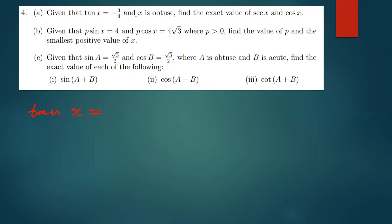We've been given that tan x is negative 3 over 4, and we've been told that this angle is an obtuse angle, meaning it's between 90 and 180 degrees. We need to find the exact values of sec x and cos x.